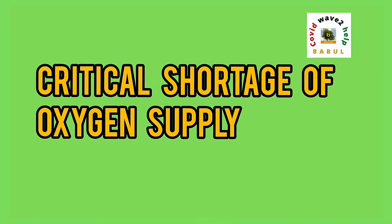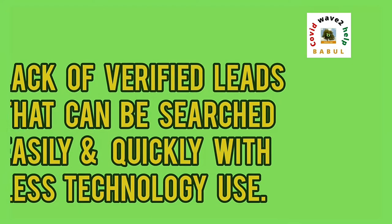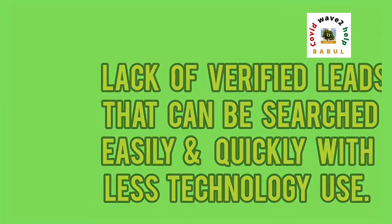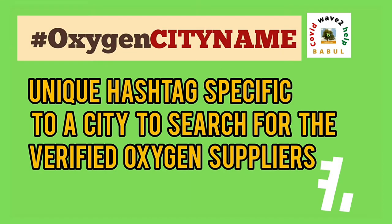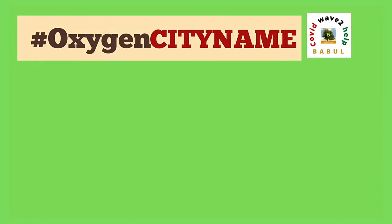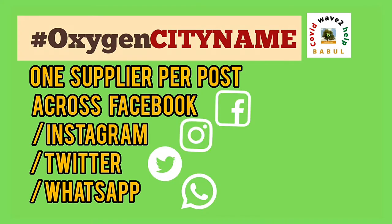Critical shortage of oxygen supply: lack of verified leads that can be searched easily and quickly with less technology use. Solution: a unique hashtag specific to a city to search for verified oxygen suppliers, with one supplier per post across Facebook, Instagram, Twitter and WhatsApp.